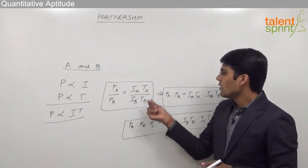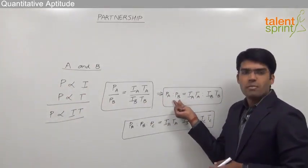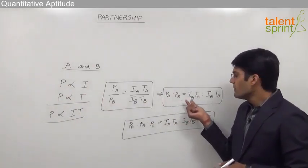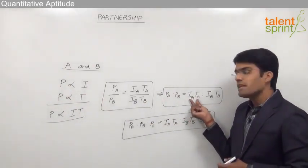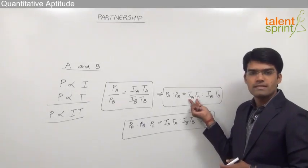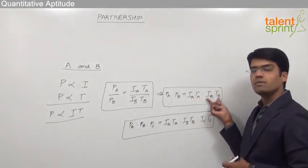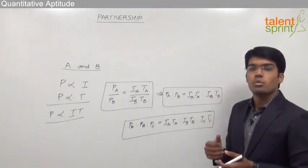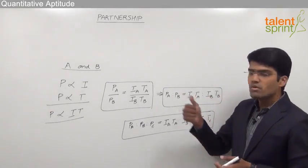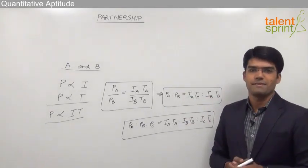Similarly, even in the case of loss, the loss of the partners depends on investment and time of investment. We can say that Loss of A to Loss of B equals Investment of A × Time of A's investment to Investment of B × Time of B's investment. Whether it is profit or loss, both are proportional to investment and time of investment.